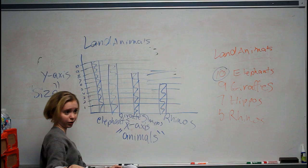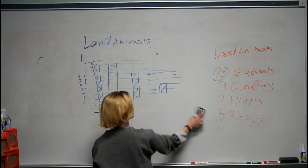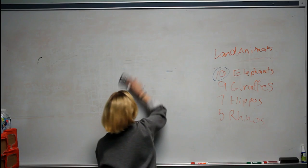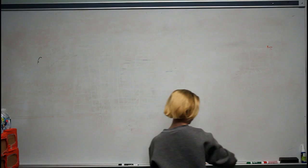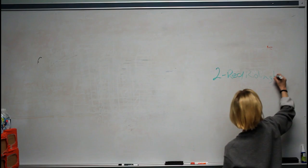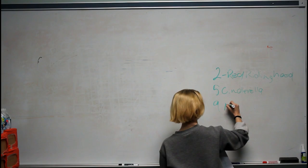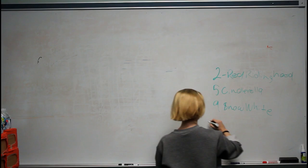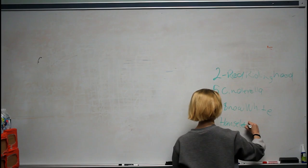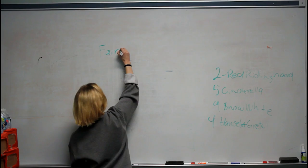The last graph I'm going to show you before we start doing it together is going to be Fairytales. We have 2 Red Riding Hood, 5 Cinderella, 9 Snow White, and 4 Hansel and Gretel. We've already done two graphs, so we should already know our first step — writing the title: Fairytales.